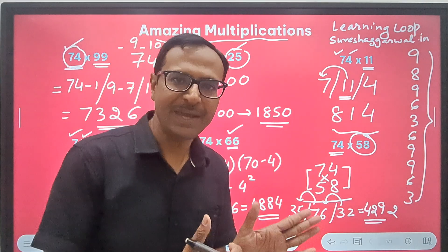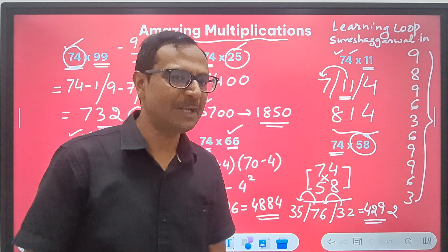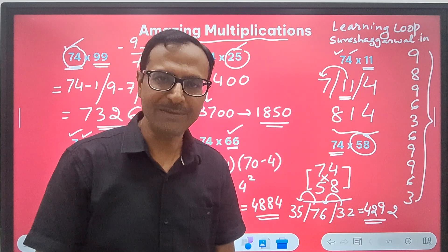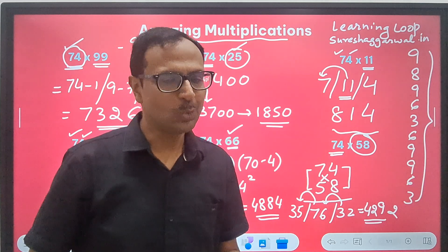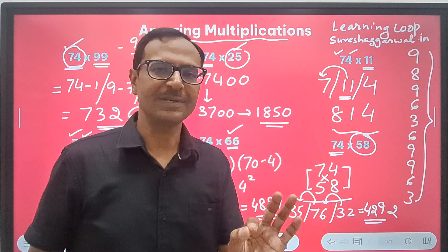There is only one method they have learned in maybe class 1 or class 2 when they did multiplication. And that's what they have been doing throughout their life. Smart people do it the smart way. And therefore, they come and talk 1% of the people.